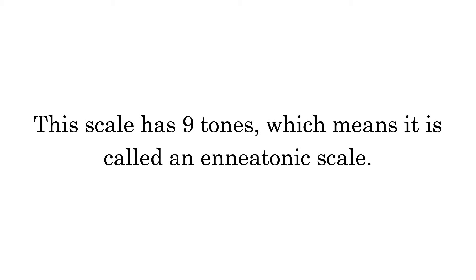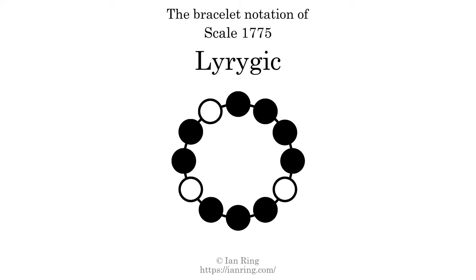This scale has 9 tones, which means it is called a nonatonic scale. This is a bracelet notation diagram of scale 1775. The shaded circles represent tones that appear in the scale, and they are read clockwise, starting at the top.